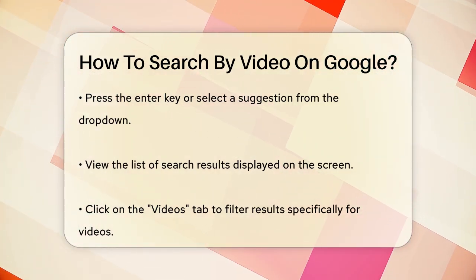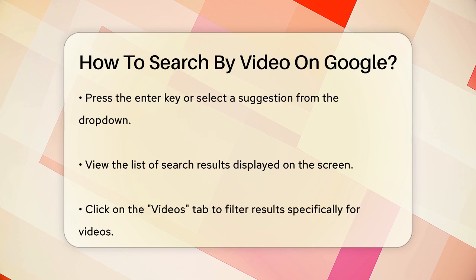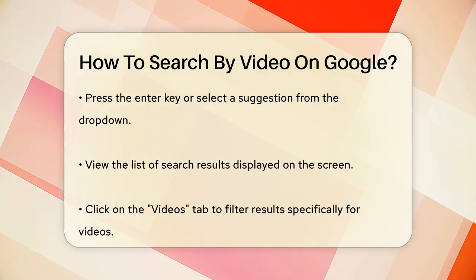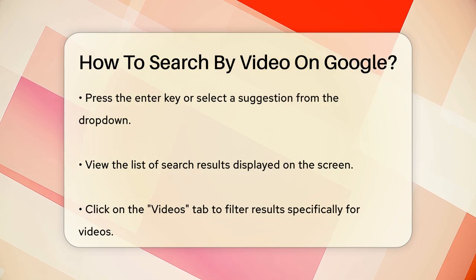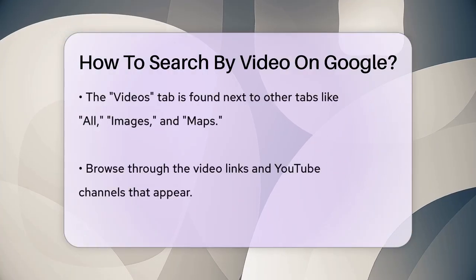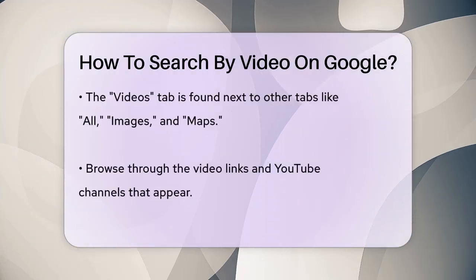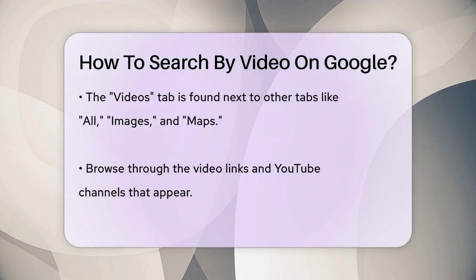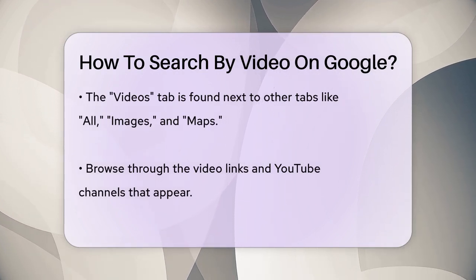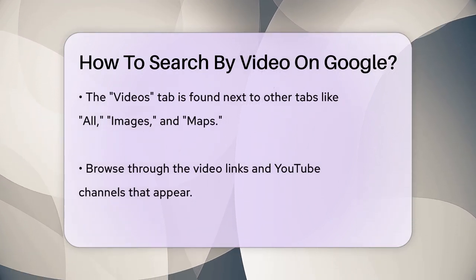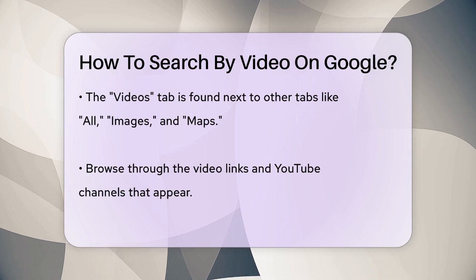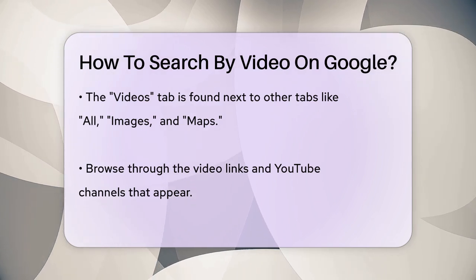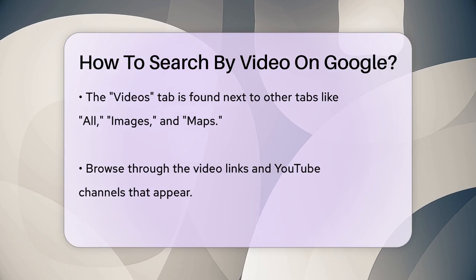This tab is usually located next to other tabs like All, Images, and Maps. Clicking on the Videos tab will take you to a page filled with video links and YouTube channels related to your search. You can browse through these results, and when you find a video that looks interesting, click on it to open it. If you want to open the link in a new tab, you can right-click on the colored text and select 'Open link in new tab.'